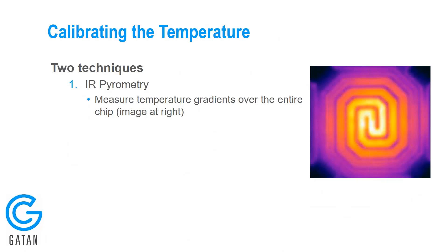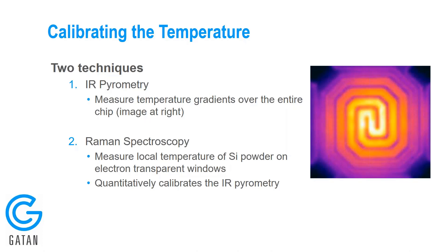How does DENS Solutions calibrate the temperature of their chips, and why should a researcher trust this calibration? DENS Solutions uses two techniques. The first is infrared pyrometry, which allows them to measure temperature gradients over the entire chip. But infrared pyrometry is difficult to calibrate precisely. They also use Raman spectroscopy, which allows them to measure the local temperature of a sample on the electron transparent windows. This allows them to quantitatively calibrate the infrared pyrometry and to calibrate the temperature of the chip based on the temperature of a sample — not based on the temperature of the heating element or some other location.